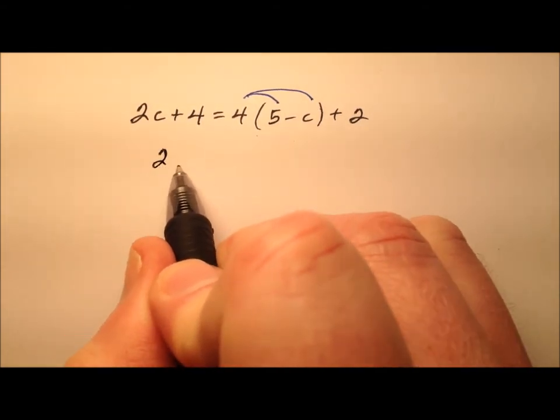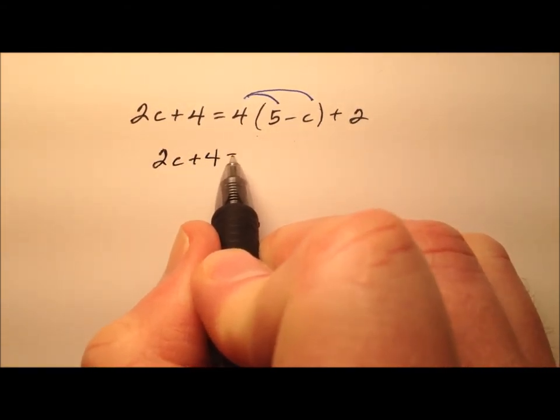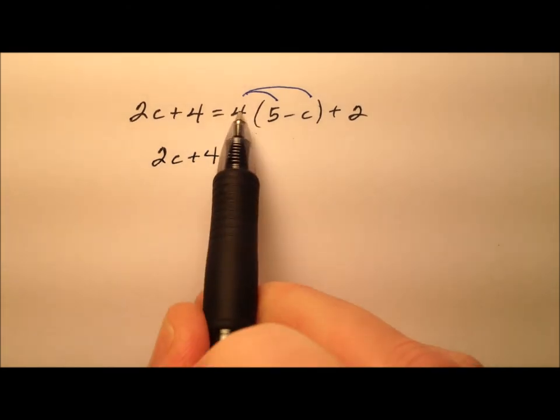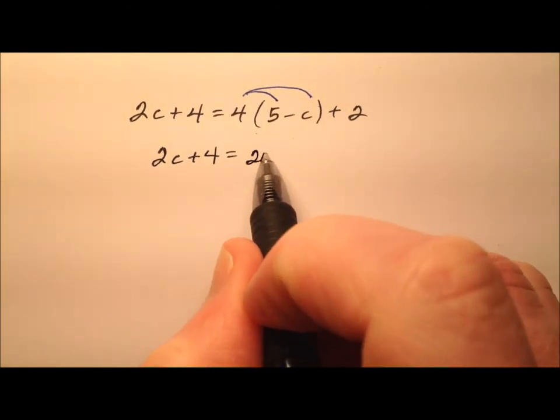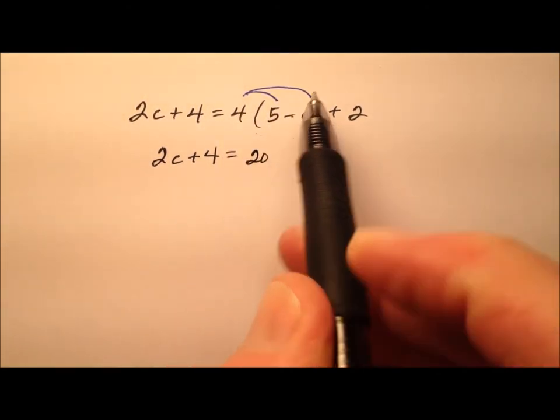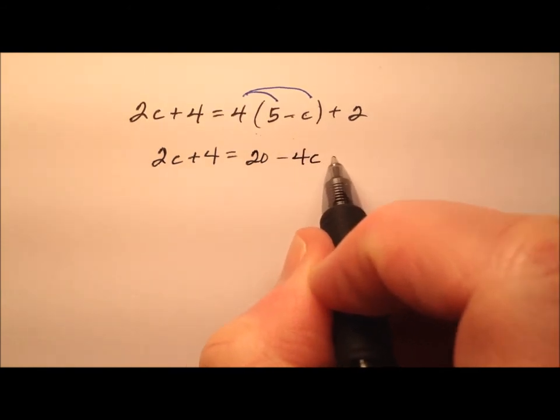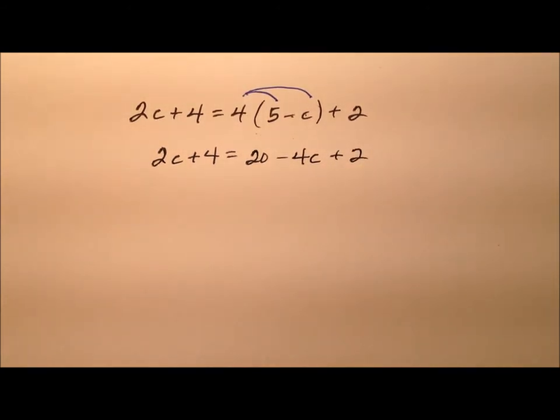So my left side will come on down, 2c plus 4, and that will equal, well, 4 times 5 is 20, and 4 times negative c will be minus 4c, and then of course we have this plus 2.